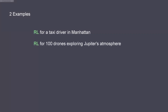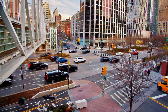Since this is the last video of this series, let's have a summary of two examples. First, reinforcement learning for a taxi driver in Manhattan, and second, reinforcement learning for 100 drones exploring Jupiter's atmosphere.